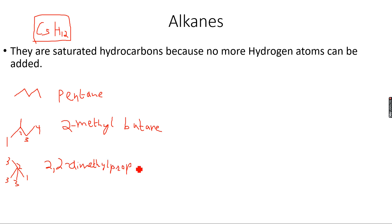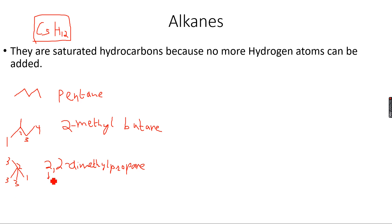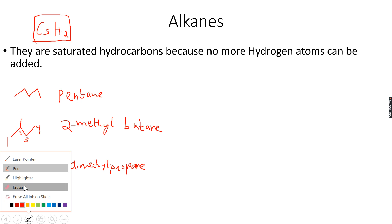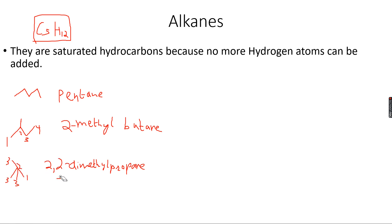Let's understand how we got this name: 'propane' because there are 3 carbon atoms in the longest chain; 'dimethyl' because there are 2 methyl groups in total; and '2,2' because one methyl group is on the second carbon atom and the other methyl group is also on the second carbon atom. So: 2,2-dimethylpropane.